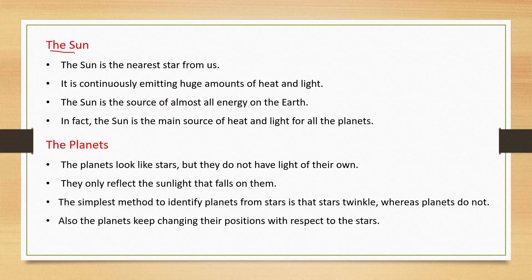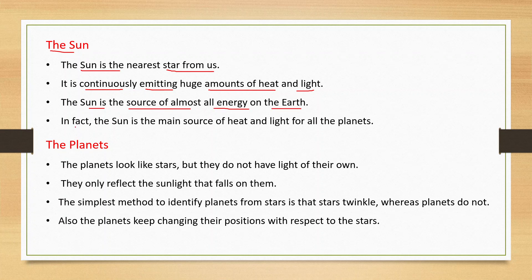The sun is the nearest star from us. It is continuously emitting huge amounts of heat and light. The sun is the source of almost all energy on the Earth. In fact, the sun is the main source of heat and light for all the planets.